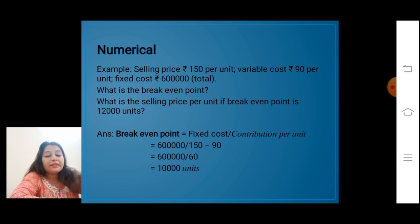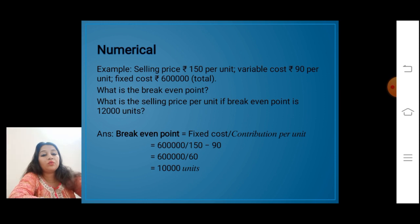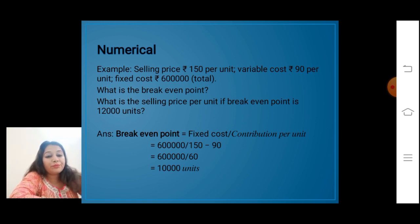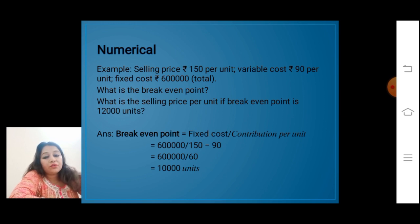Next, a calculation example: selling price is rupees 150 per unit, variable cost is rupees 90 per unit, fixed cost is 6 lakh. We need to calculate the break-even point. Break-even point equals fixed cost upon contribution per unit. Contribution is selling price minus variable cost: 150 minus 90 equals 60. So break-even point equals 6 lakh upon 60, which is 10,000 units.